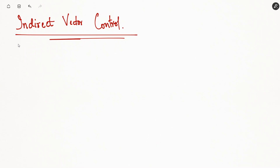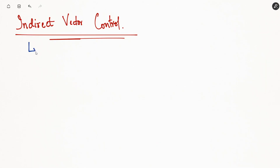We have another vector control strategy called indirect vector control, and it is most widely used and preferred over the direct vector control strategy.